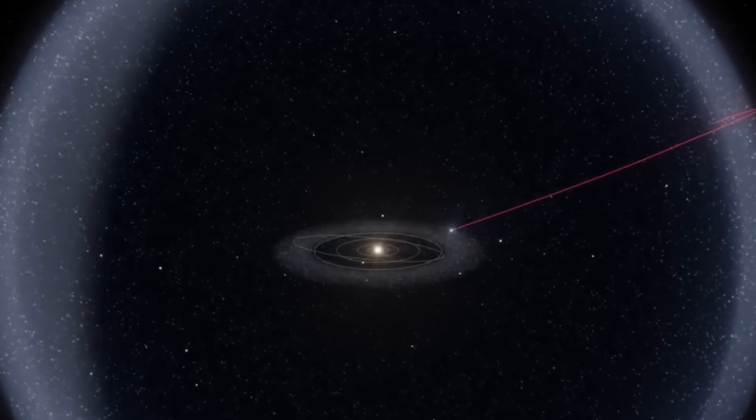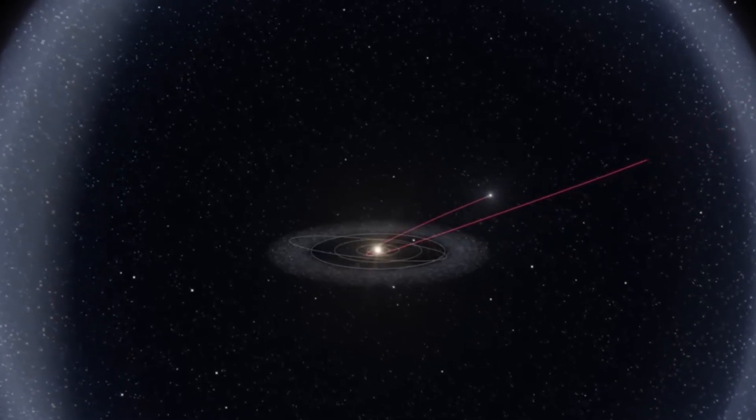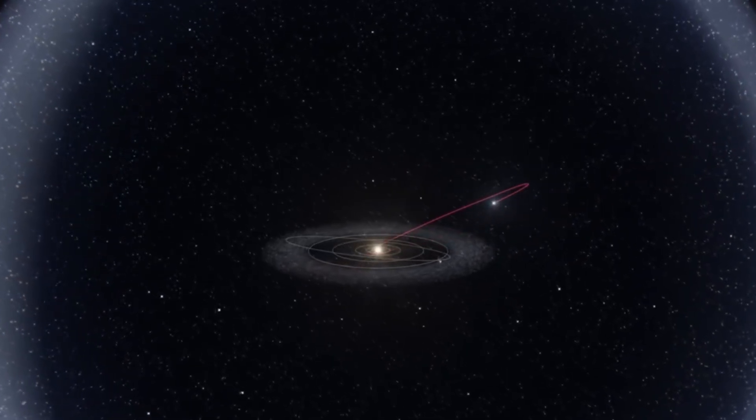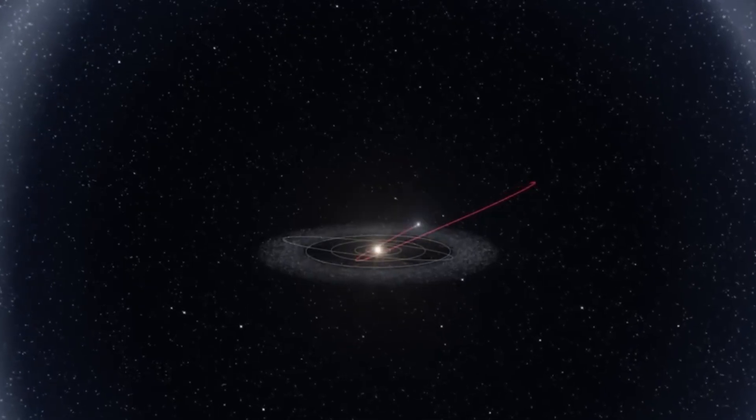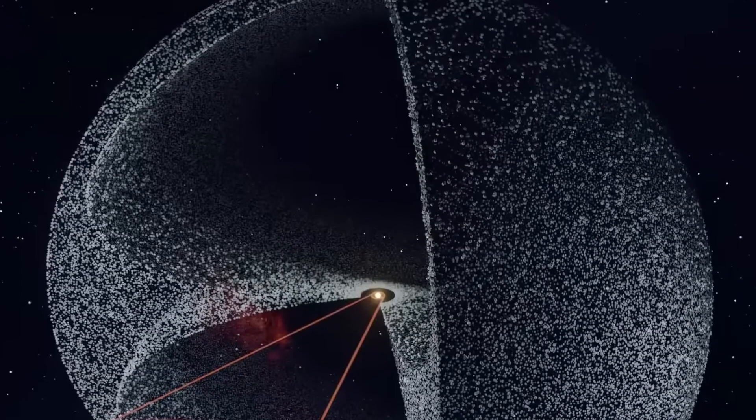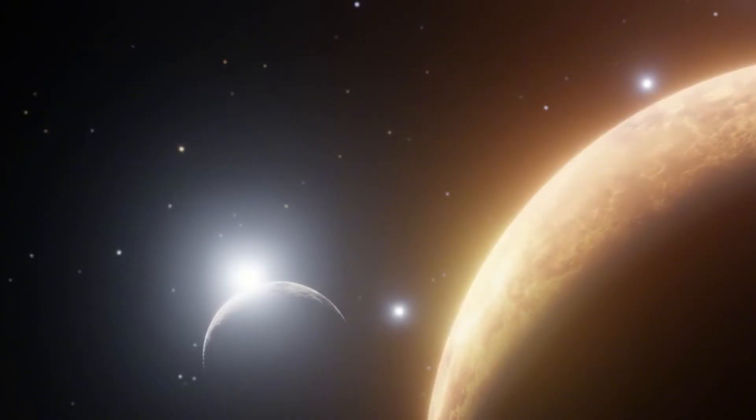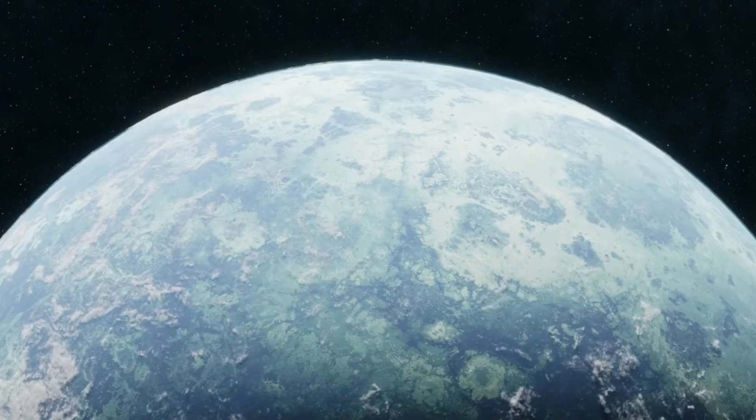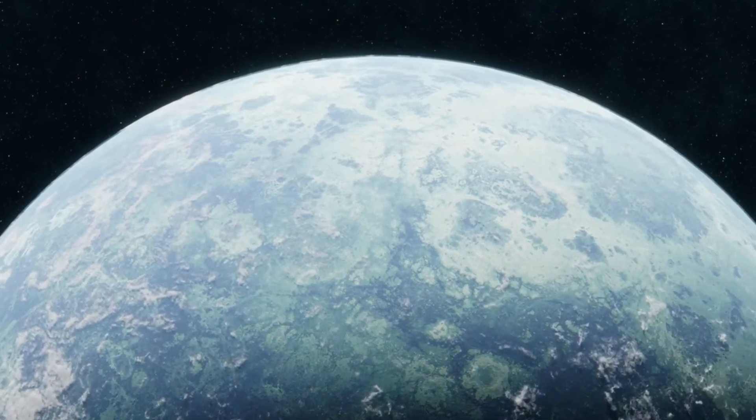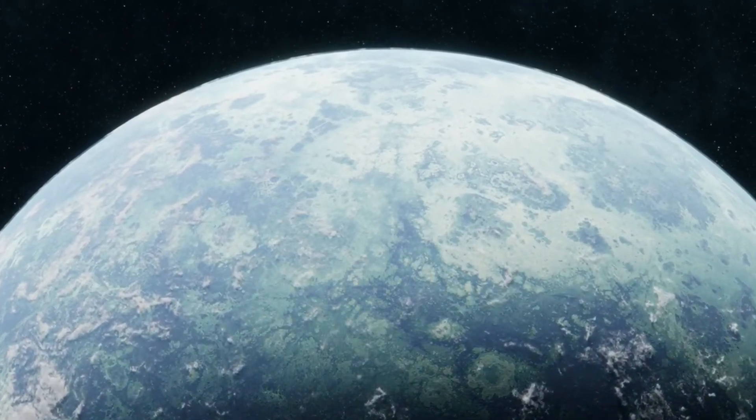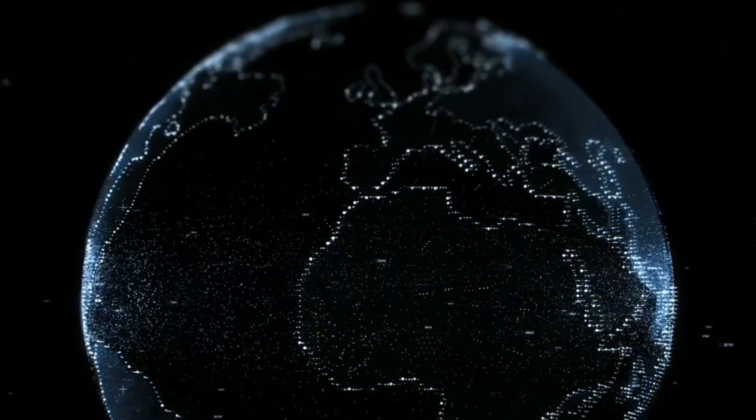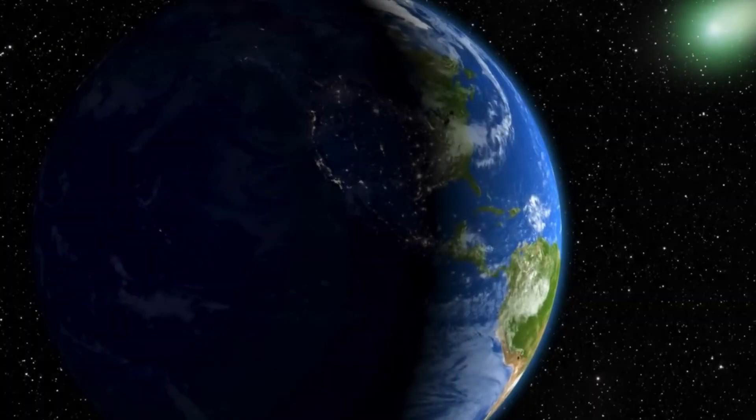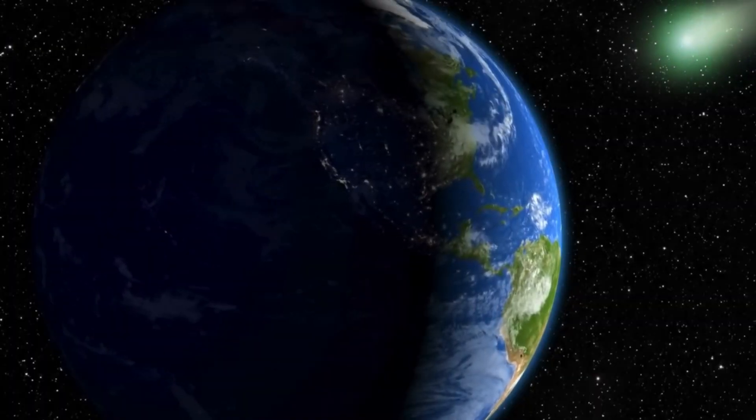The implications are profound. If we've been misled about something as basic as the shape of our own solar system, what other cosmic truths might be oversimplified to the point of deception? The traditional model fails to account for the vast majority of our solar system's actual structure, focusing narrowly on the planetary orbits while ignoring the much larger, three-dimensional reality that extends far above and below this arbitrary plane.